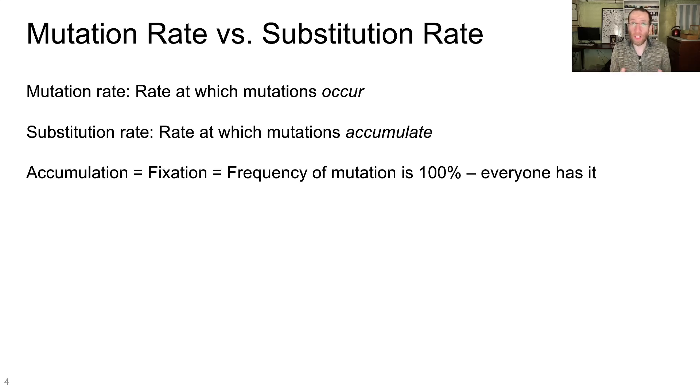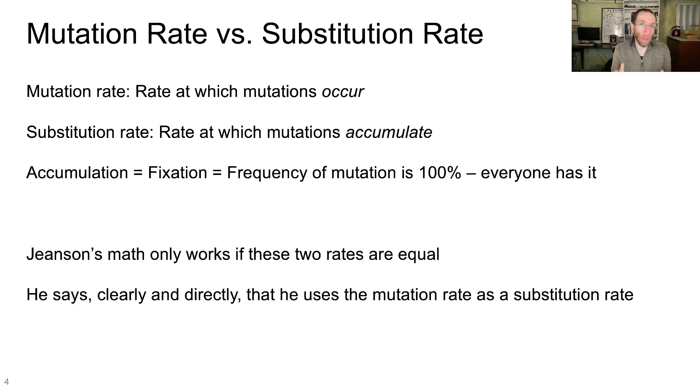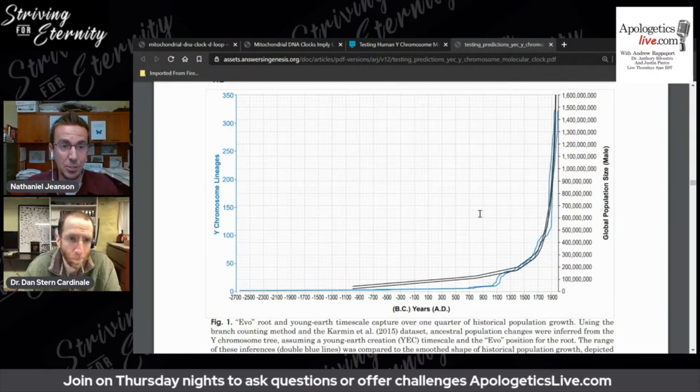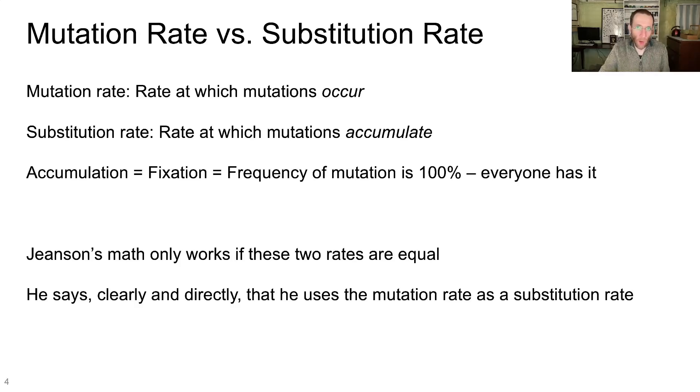When a mutation achieves fixation, that means its frequency within the population is 100%. Everybody has that mutation. We use the substitution rate to calculate the time to most recent common ancestor, because for different groups that we're comparing, we can actually look specifically at the fixed variation. Now very importantly, Jensen's math only works if these two rates are equal. He has said clearly and directly that for his calculations, he's using a mutation rate as the substitution rate. Take a look. And I'm treating the mutation rate as a substitution rate. We'll see in a minute why that's going to be a problem for his other position in this video.